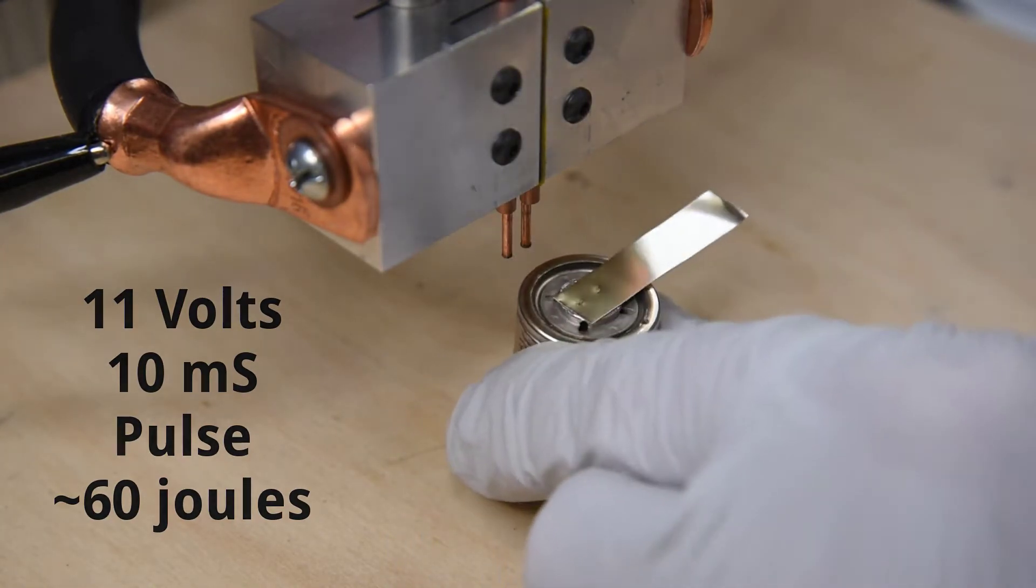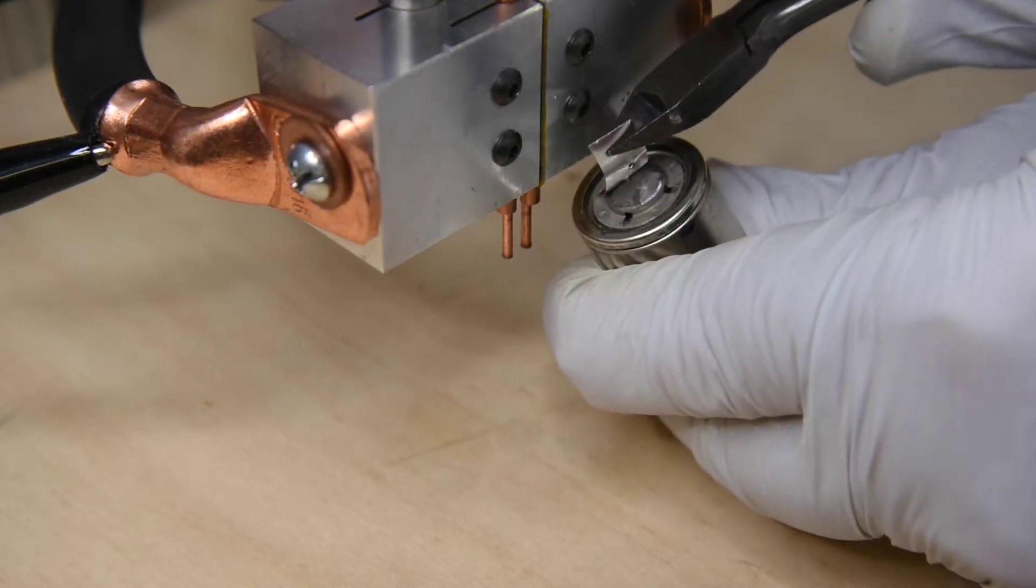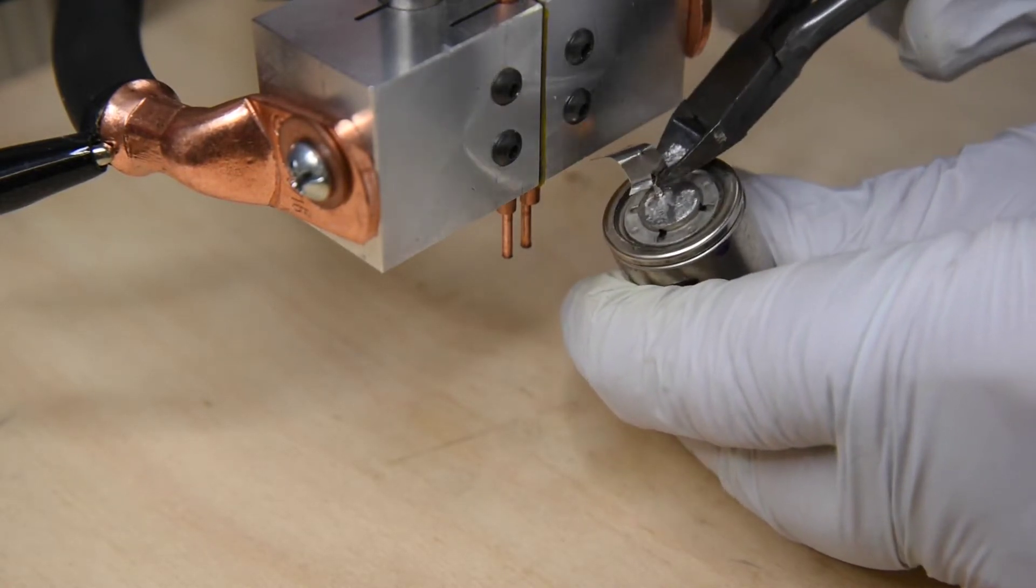At 60 joules, we start to get a solid connection. I really think this would be the minimum needed to do 0.15 millimeters, but I don't think I would put much trust in it.